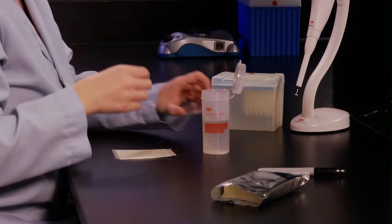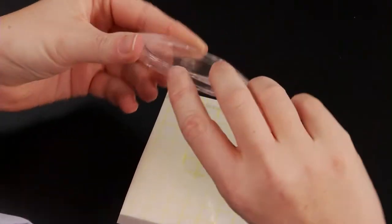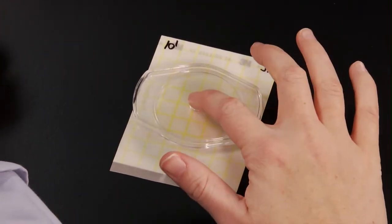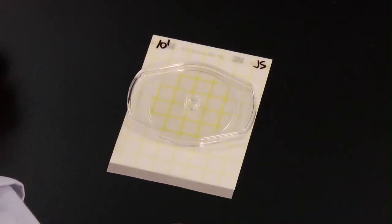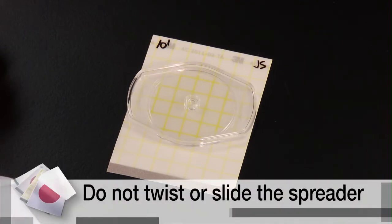Pick up the appropriate spreader, with the ridge side down, and place it on the top film, centered over the inoculum. Apply pressure to the center of the spreader to distribute the inoculum over the circular area. Do not twist or slide the spreader.